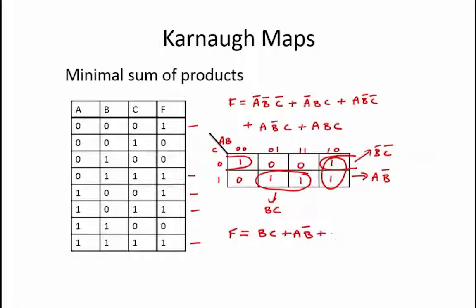This is a minimal sum of products representation of our function. Note, however, that instead of grouping the two ones in the rightmost column, we could have instead grouped the two rightmost ones in the bottom row. That would have produced the term AC instead of A not B. Either combination of terms is a valid minimal sum of products representation for this function.